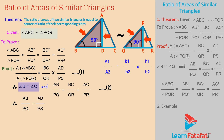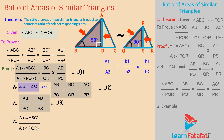Since corresponding sides of similar triangles, this is relation 3. Now from equations 1, 2, and 3, we get area of triangle ABC divided by area of triangle PQR is equal to BC divided by QR into AB divided by PQ. From equations 3 and 4, we get area of triangle ABC divided by area of triangle PQR is equal to AB divided by PQ into AB divided by PQ.